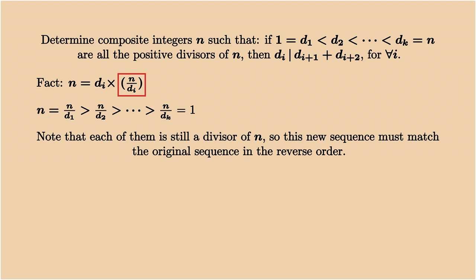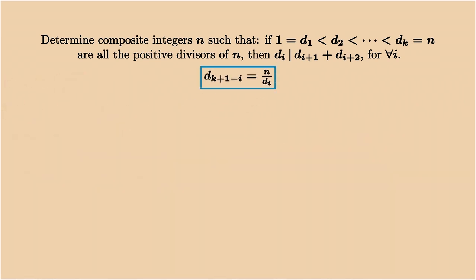So this new sequence must be identical to the original sequence. Knowing that the original sequence is ascending and this sequence is descending, so they must match each other in the reverse order. So we get dk equals n over d1, dk minus 1 equals n over d2, and so on. So to make it simple, we have dk plus 1 minus i equals n over di. And this is the key property not recovered by ChatGPT.